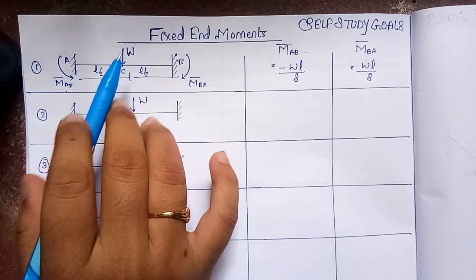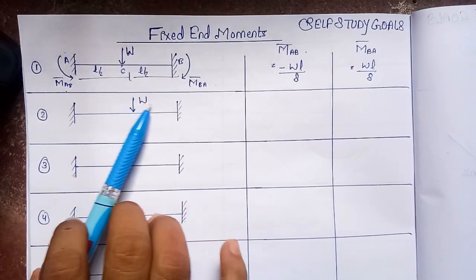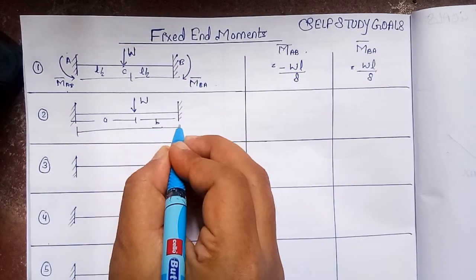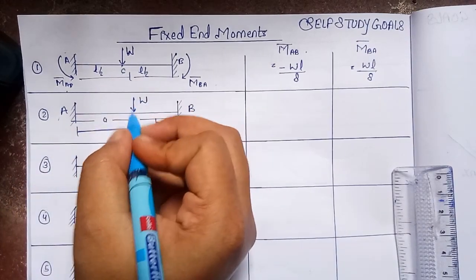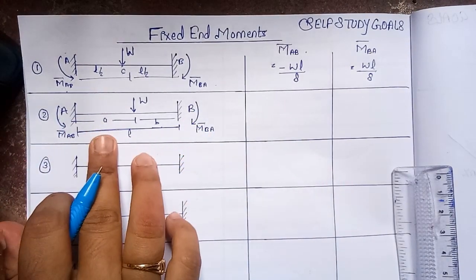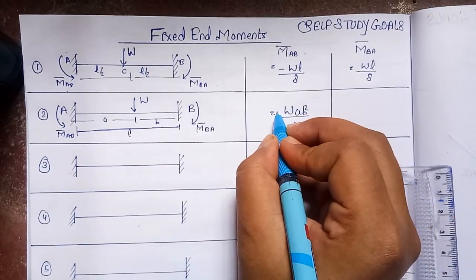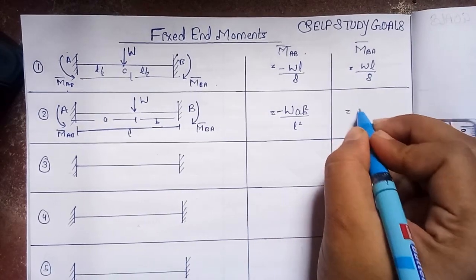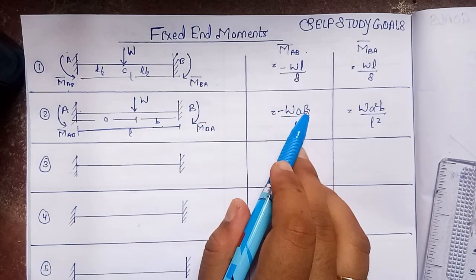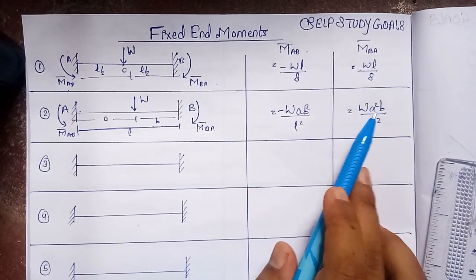The second case is when the point load is not at the center but at any position along the beam. Let span from A to the load be 'a' and from the load to B be 'b', with total length L. The anti-clockwise moment at A gives M-bar_AB = −Wab²/L². The clockwise moment at B gives M-bar_BA = +Wa²b/L². Note: the square is on 'b' for joint A and on 'a' for joint B — don't get confused.